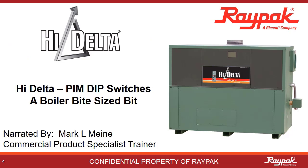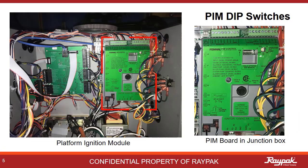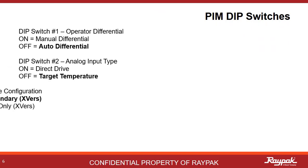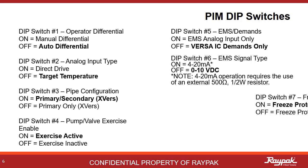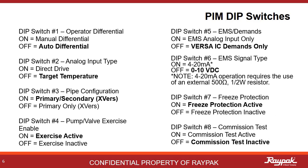Welcome to a Boiler Bite-Sized Bit. In this presentation, you will learn how to set the Versa dip switches specifically for the High Delta family of boilers. The platform ignition module, commonly called the PIM, is inside the junction box behind the center panel. The dip switches are recessed in a little box on the front of the PIM. Like the Versa board, there are eight dip switches here also. We will discuss each of these on the next few slides.